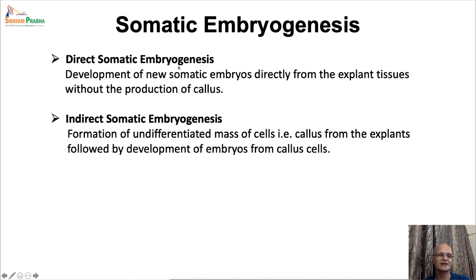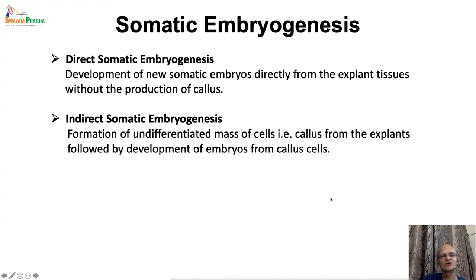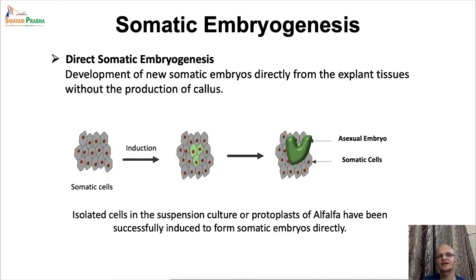Depending on which pathway it takes, somatic embryogenesis can be grouped into two categories: direct somatic embryogenesis or indirect somatic embryogenesis. Like organogenesis, the same phenomena and pathways apply here — direct somatic embryogenesis involves development of new somatic embryos directly from the explant tissue without callus production, while in indirect somatic embryogenesis, specialized tissue is first de-differentiated to form undifferentiated cells, which are then induced to develop embryos from these callus cells.